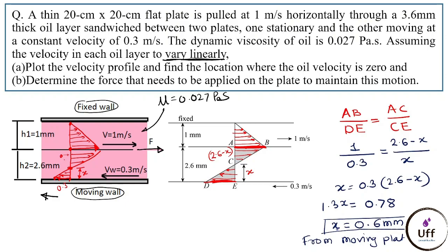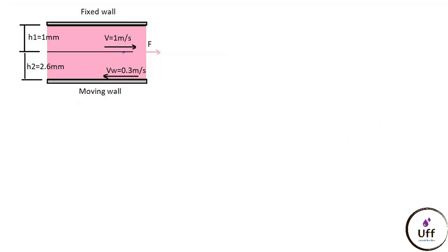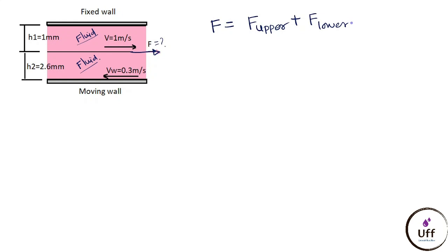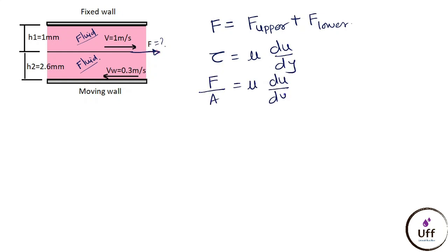For the second question — determine the force needed to maintain the central plate's motion at 1 meter per second. There is fluid above and below this plate. The applied force equals the force acting on the upper side plus the force acting on the lower side. These forces are found using Newton's law of viscosity: tau equals mu times du/dy, and tau equals force divided by area.